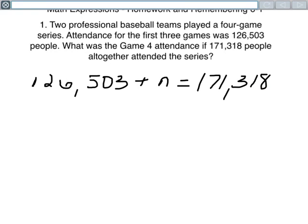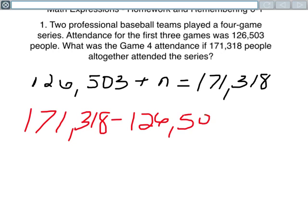Now, what we have to ask ourselves is how are we going to find that number? Well, what we need to do is subtract. We need to subtract 126,503 from 171,318. And this is going to give us our missing variable n.